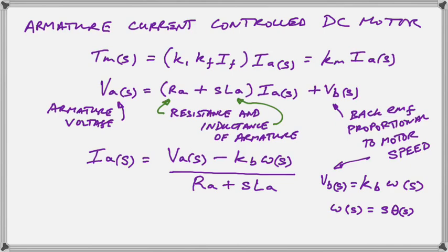Okay, so now Ra plus sLa is the resistance and inductance of the armature coil where Ia and Va are the current and voltage on the armature coil. Now the armature because it's spinning in a magnetic field will generate some back EMF proportional to the motor speed.